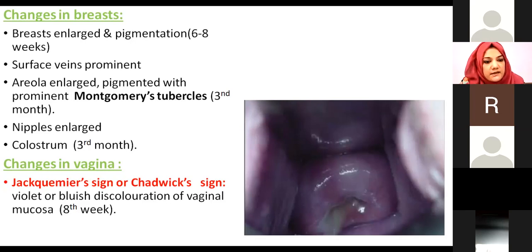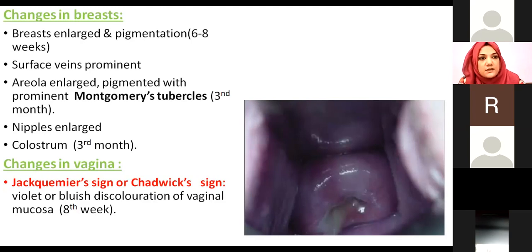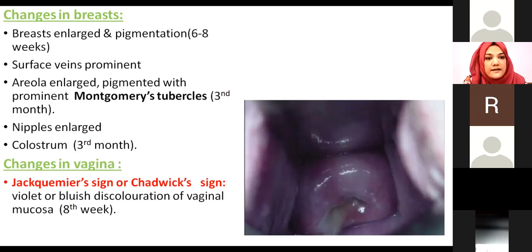Changes in the vagina are known as the Chadwick sign or Jacqueline sign. During pregnancy, on examination of the vagina, there is bluish discoloration of the mucosa due to venous congestion. Initially it is a purplish color, then as pregnancy progresses it turns into a bluish-purple color. This is also a presumptive sign — not a definitive sign.